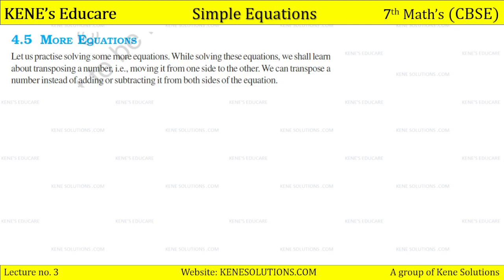Let us practice solving some more equations. While solving these equations, we shall learn about transposing a number. Previously, if we had 3n plus 4 equals 7, we would subtract 4 from both sides to get the answer. But look here, if we have plus 4 on this side and need to move it to the other side, when transposing, the sign changes to minus 4.